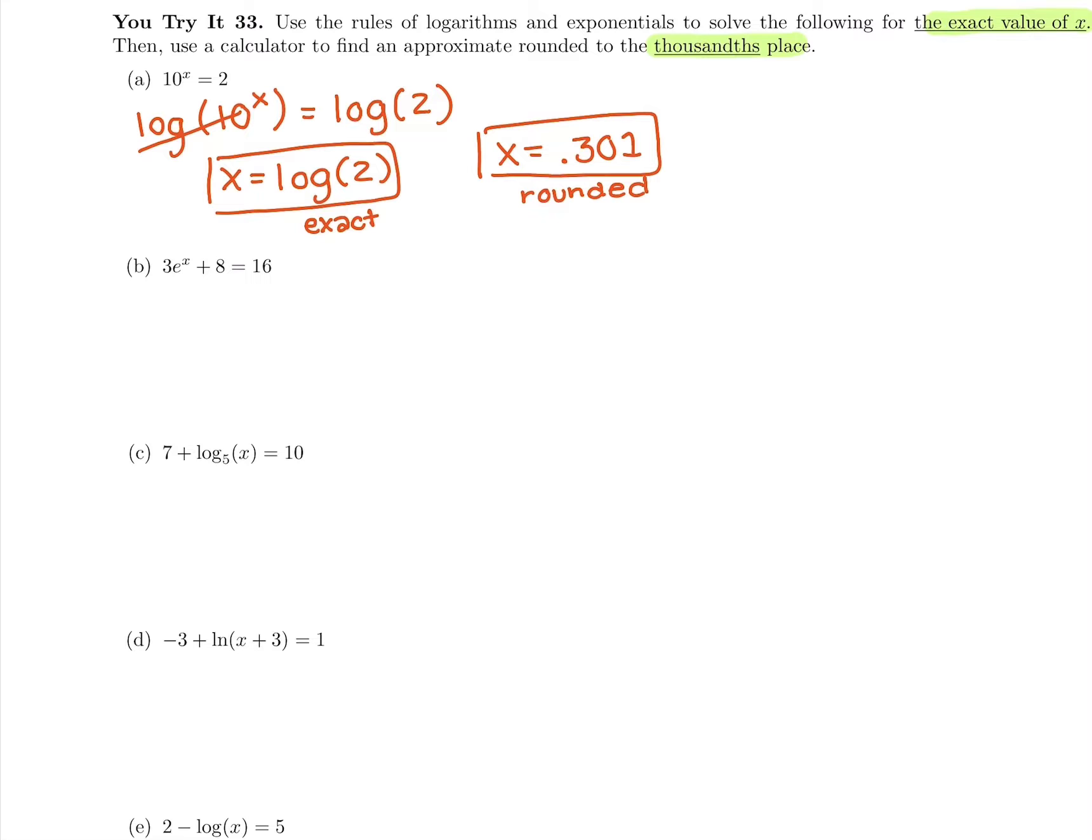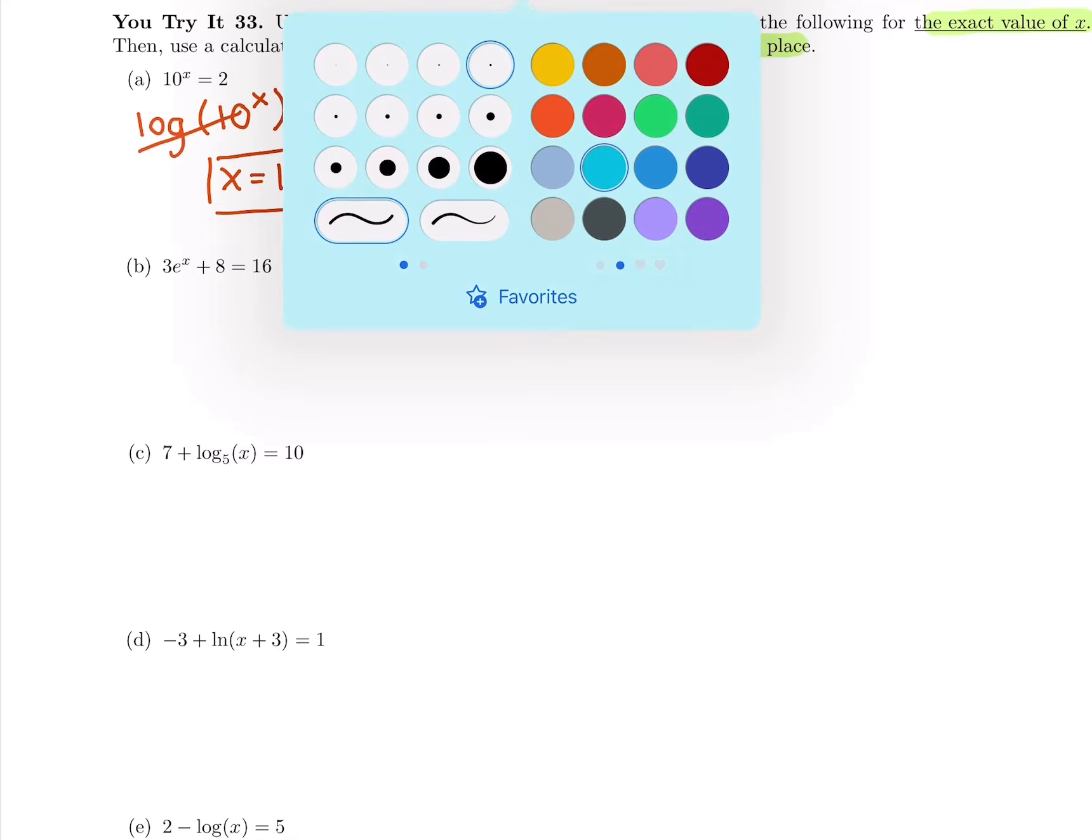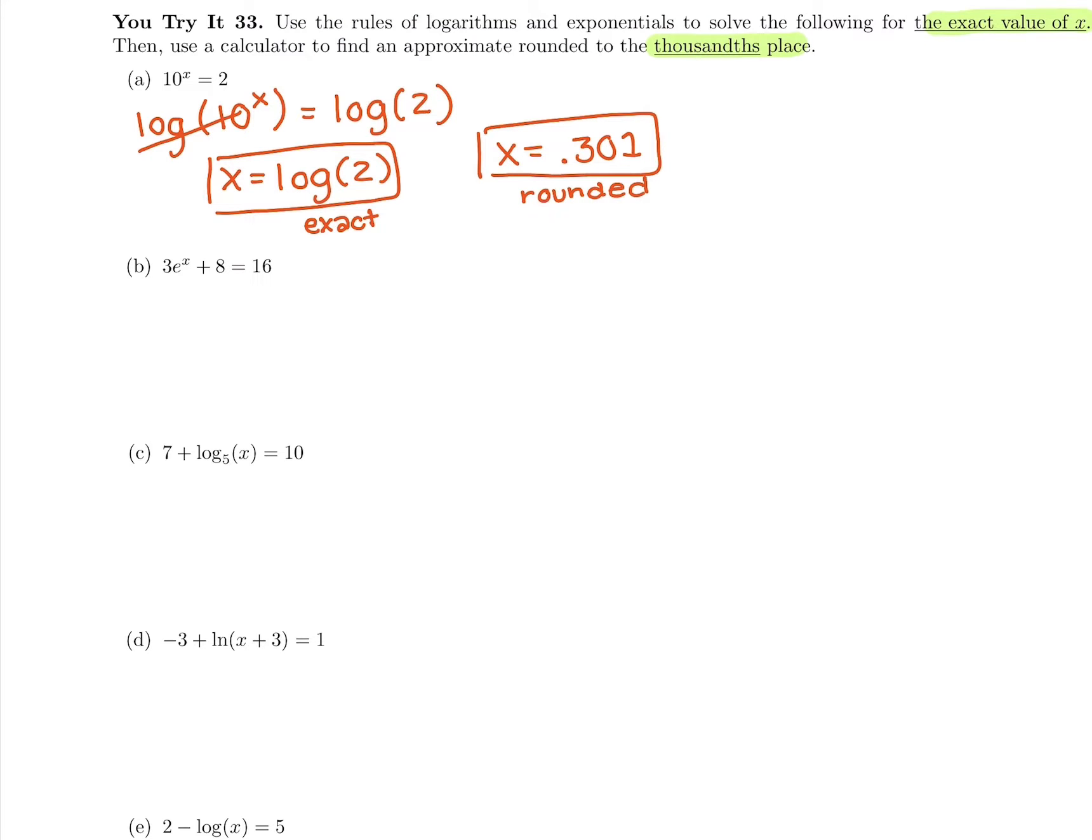Doing the exact same thing with the next one, I recommend pausing the video and coming back to it. I'm going to start by getting the e to the x on one side by itself. So I'm going to subtract 8 from both sides, which gives me 3e^x equals 8. Now I need to get that e^x by itself still, so I'm going to divide both sides by 3.